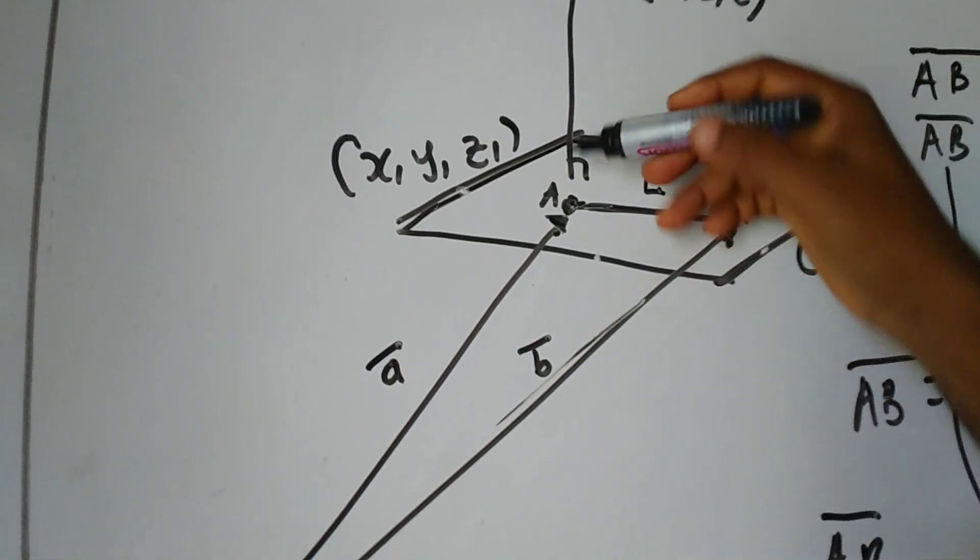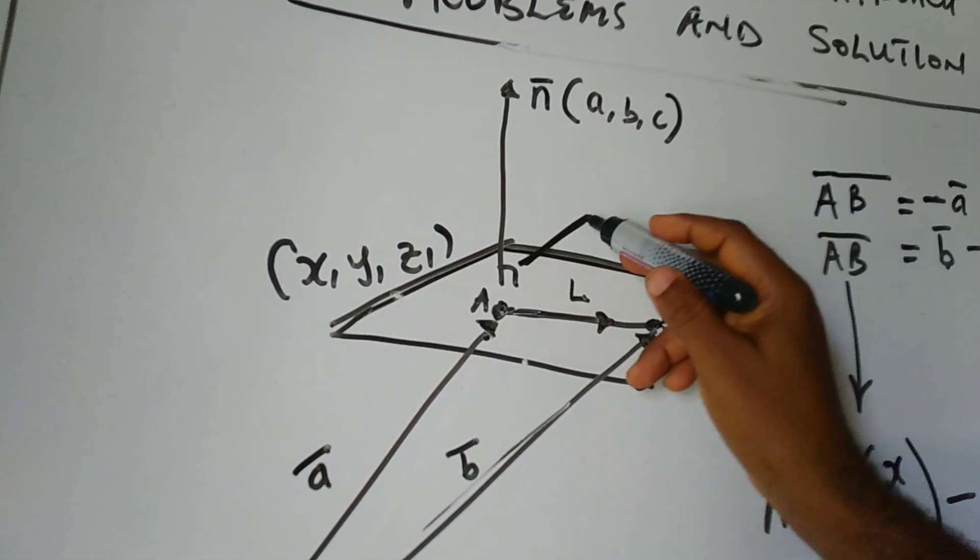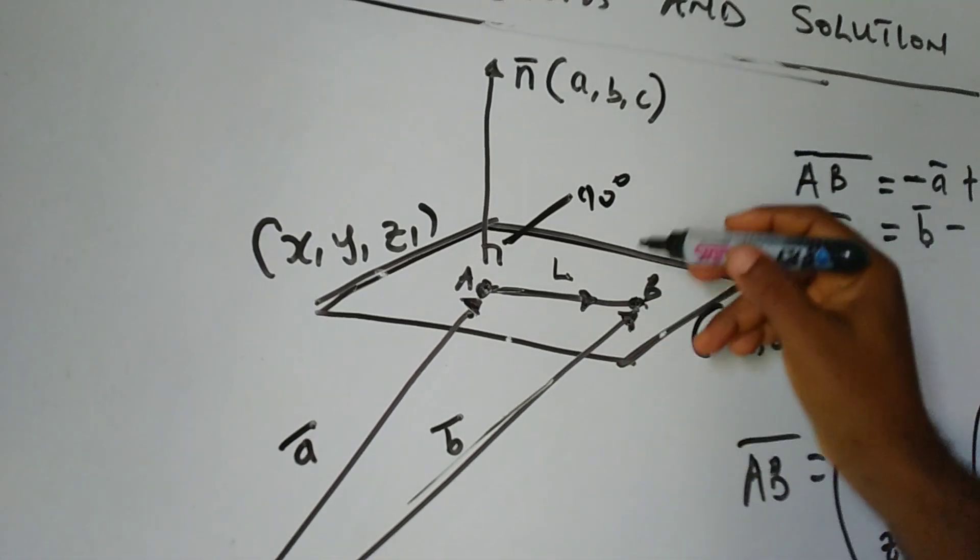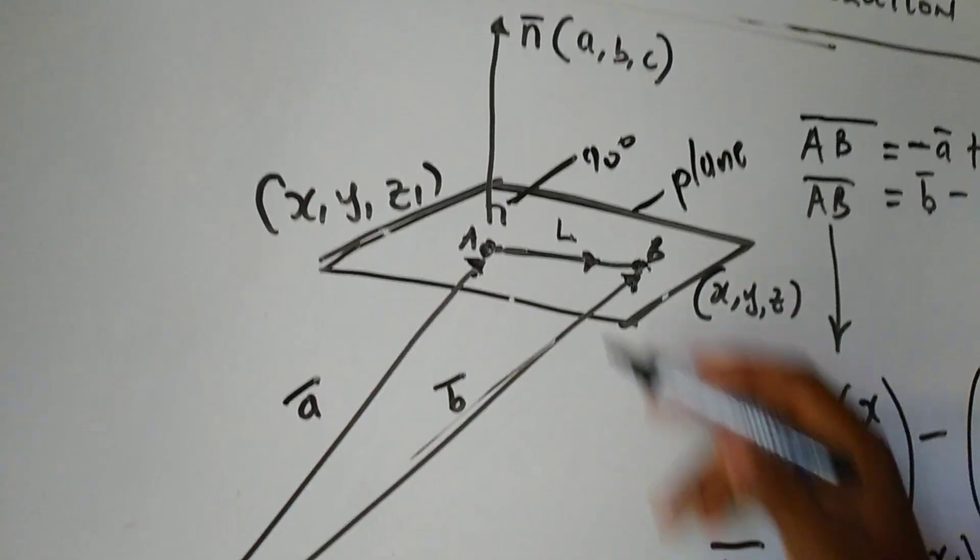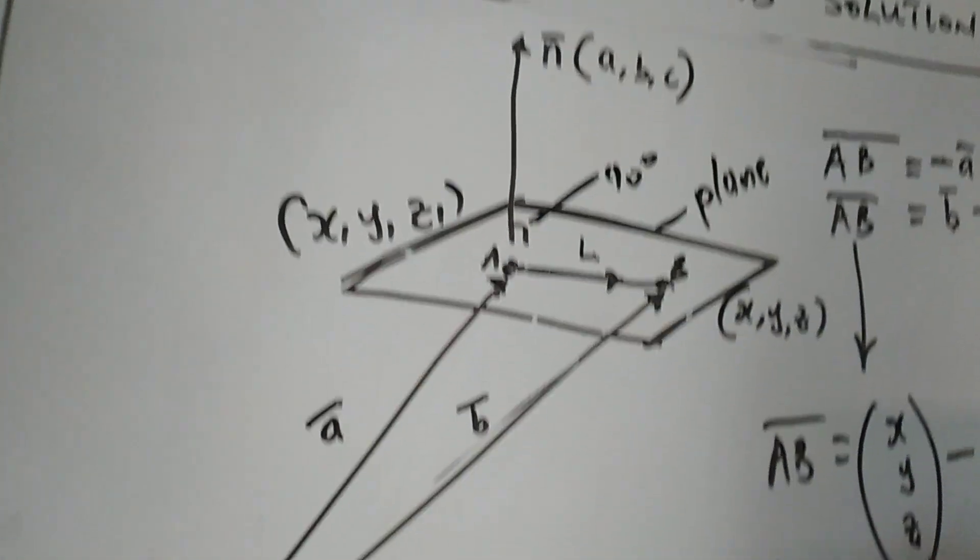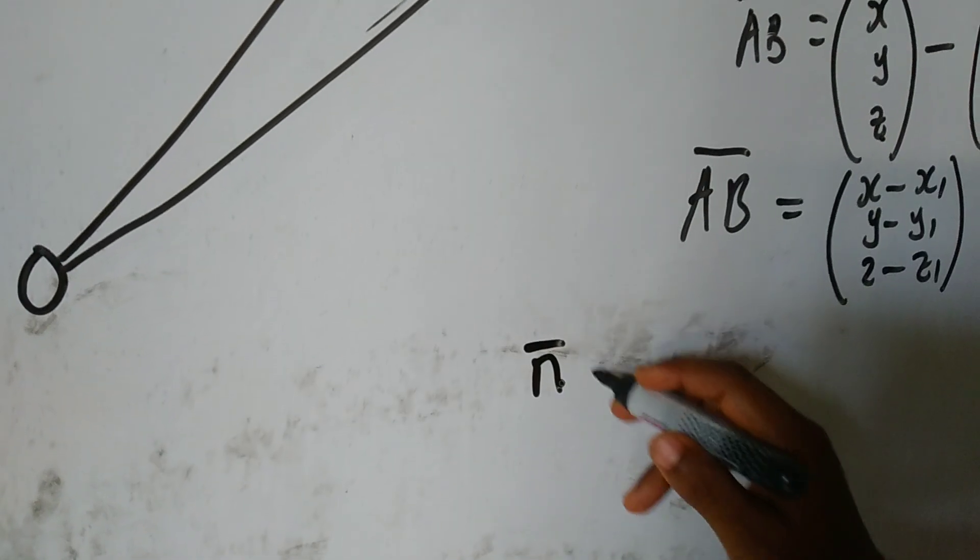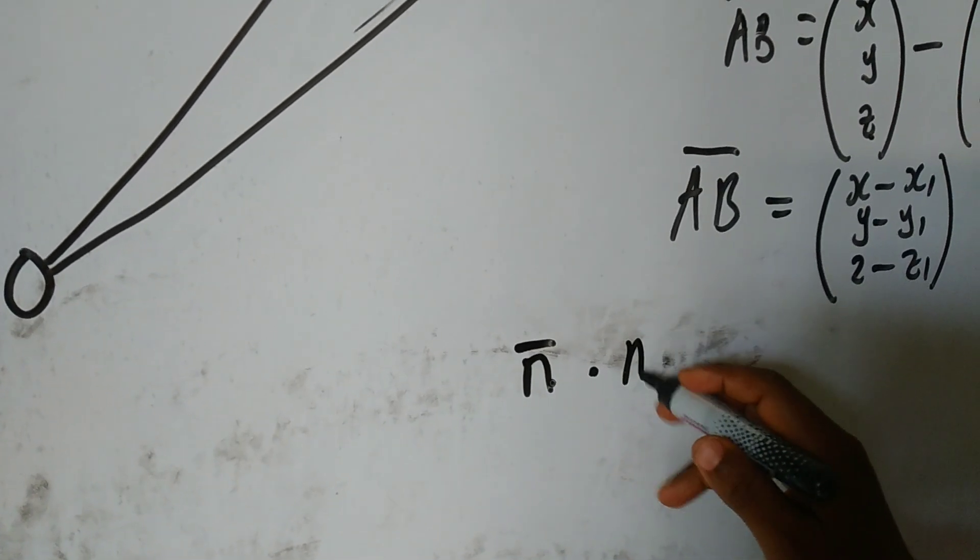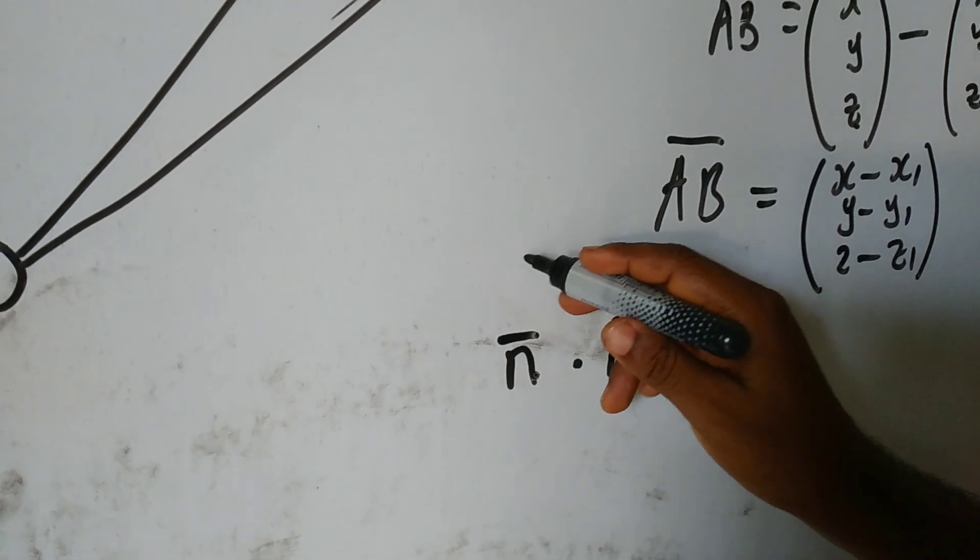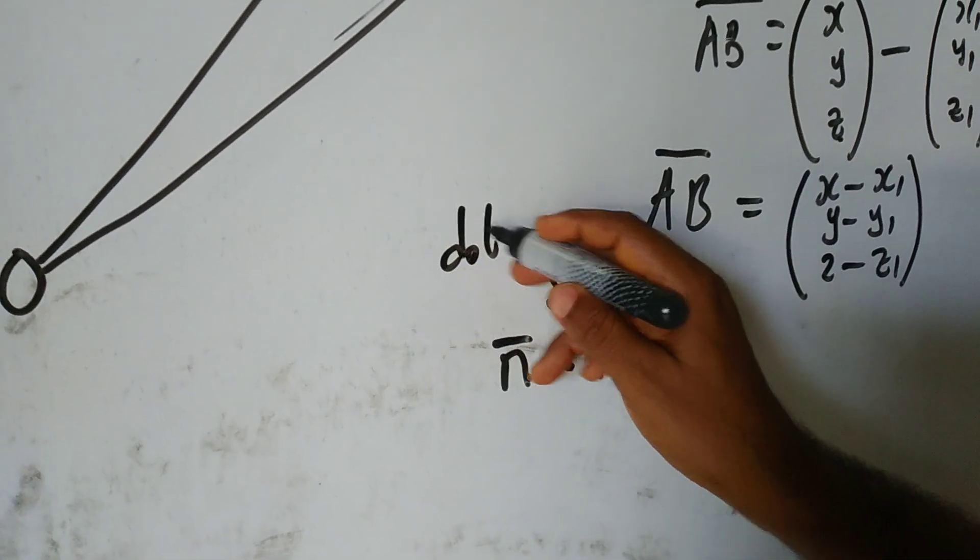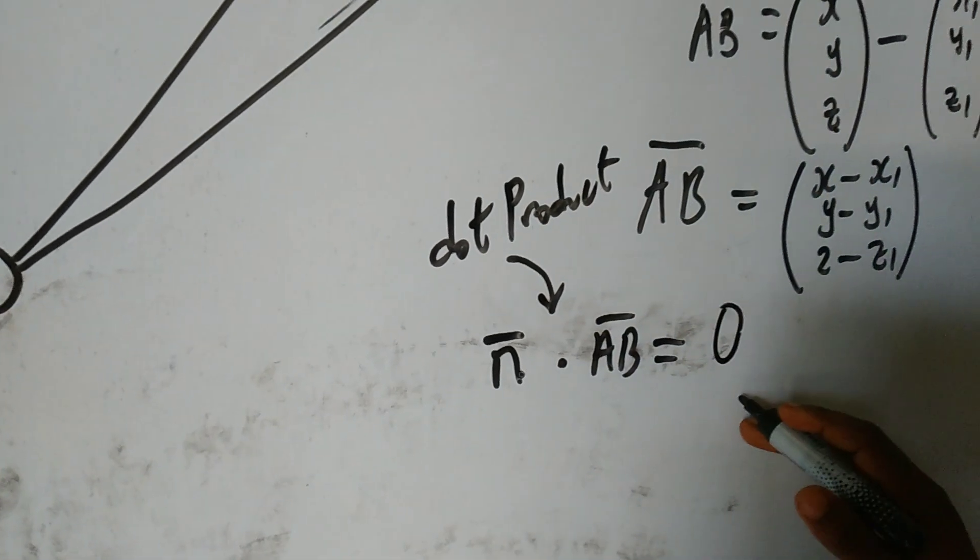Now, for vector AB to be perpendicular to this particular vector, that perpendicular simply means at an angle of 90 degrees. Don't forget, this is a plane surface. Now, for these two vectors to be perpendicular, their dot product must be equal to 0. So, this vector N bar dot vector AB bar. This is a dot product. So, their dot product must be equal to 0.